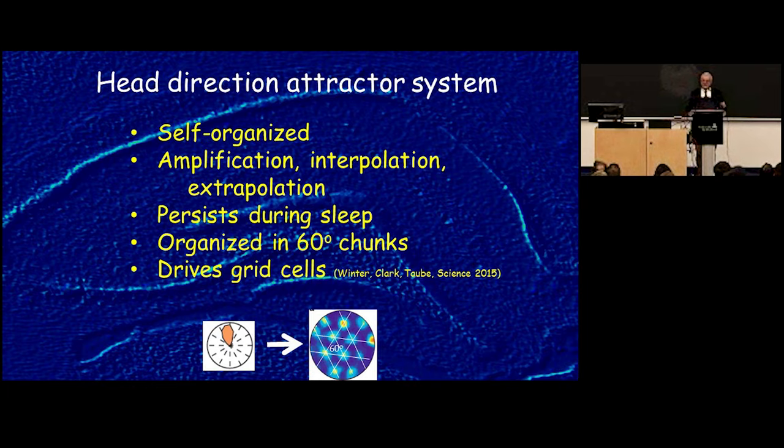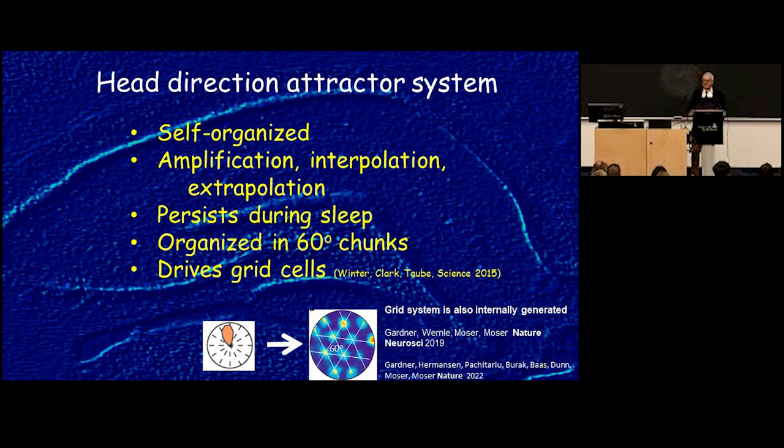So just to summarize, this is a self-organized and intrinsically internally organized system. It can do a lot of things such as amplification, but it also can do interpolation. I can close my eyes and it's still there. And maybe extrapolation a little bit that when I turn my head, I can predict what comes next. It persists during sleep. And the chunks of 60 degrees is important because the grid system in the entorhinal cortex that you may heard about, the grid cells, they also have this organization. And if you destroy the head direction system, the grid system disappears. And Adrian's work gave rise to a barrage of papers by others and showed pretty much the same thing in the entorhinal cortex with grid cells that they persist during sleep. Non-REM sleep, the dynamic is 10 times faster during non-REM sleep, and so on.